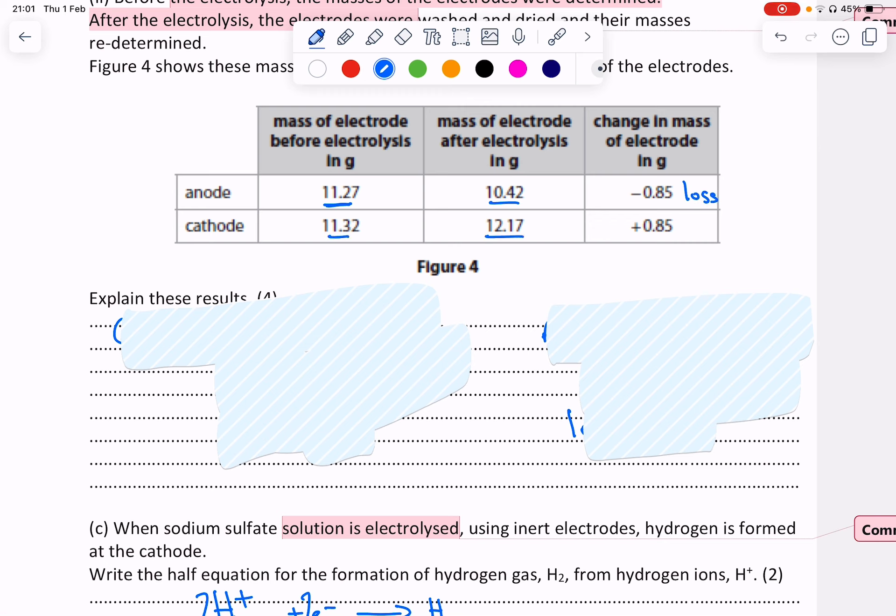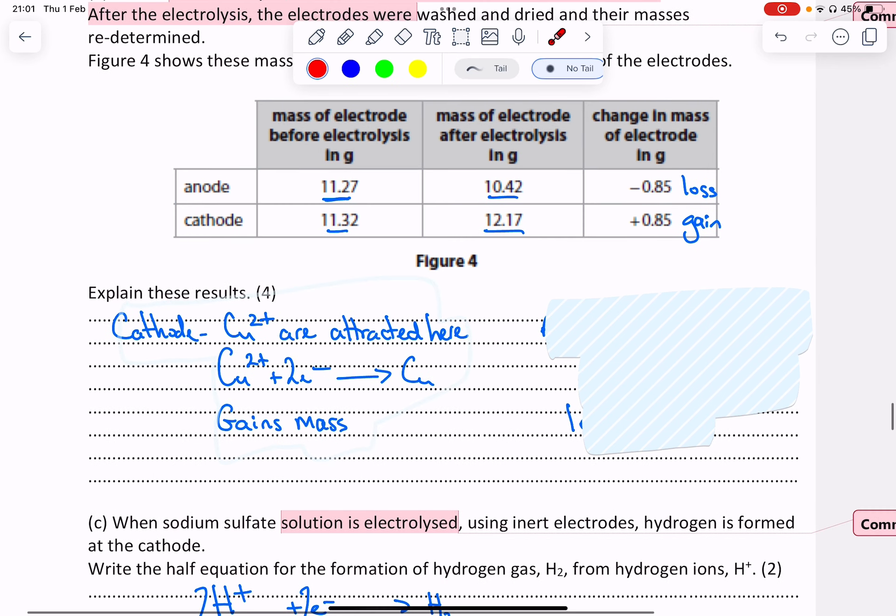There's a loss of mass, and the cathode has increased to 12.27, so there's a gain in mass. So let's try and explain these results. To explain the results, let's look at the cathode first.